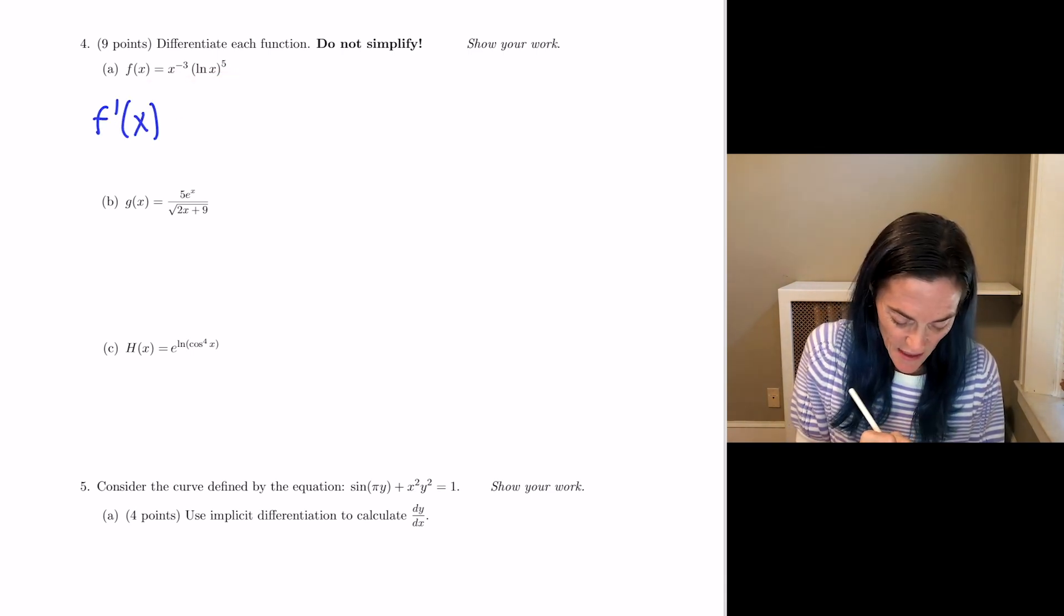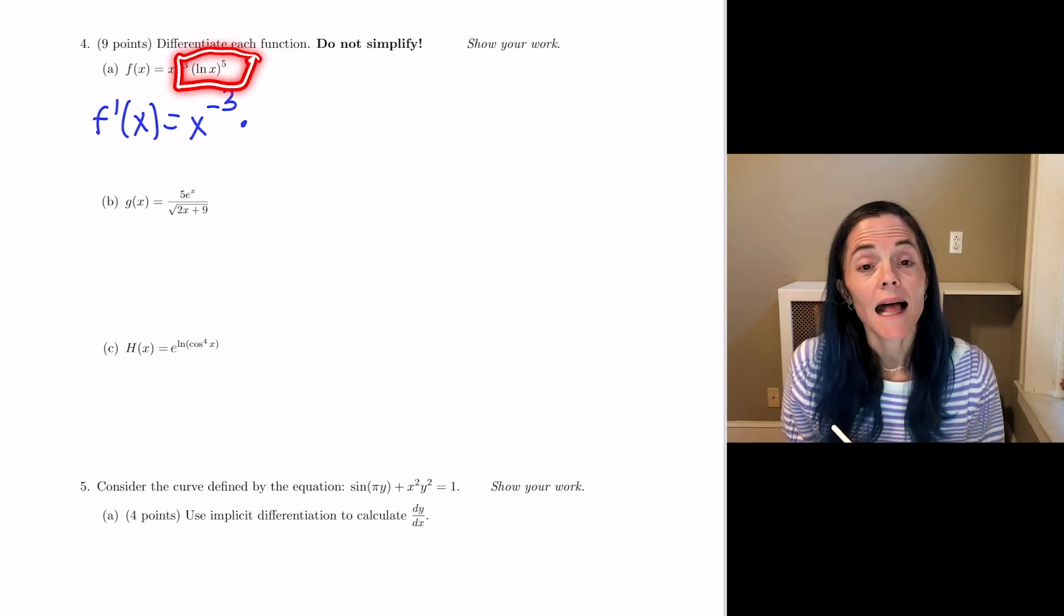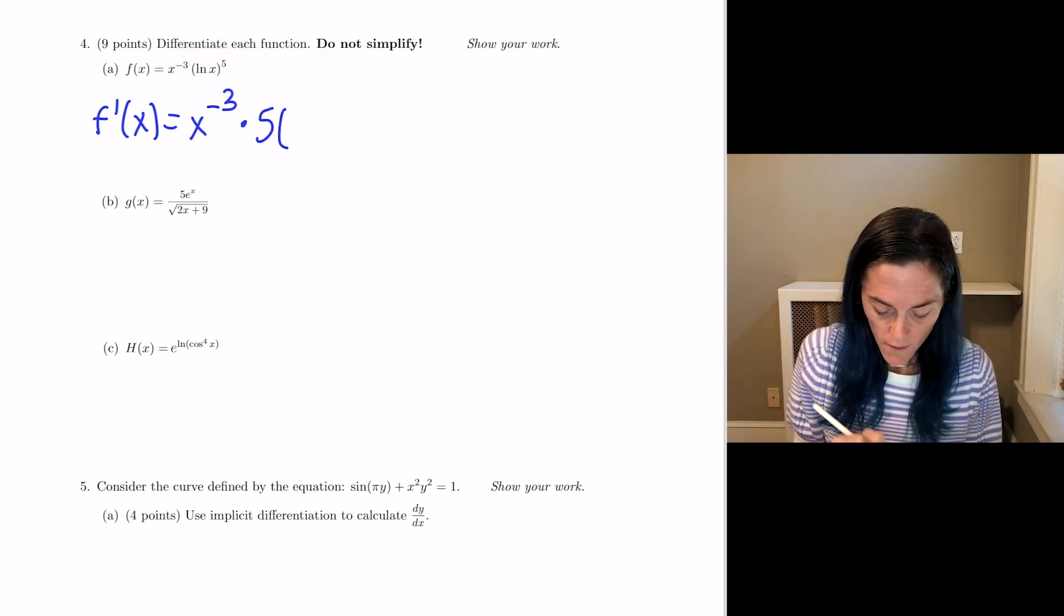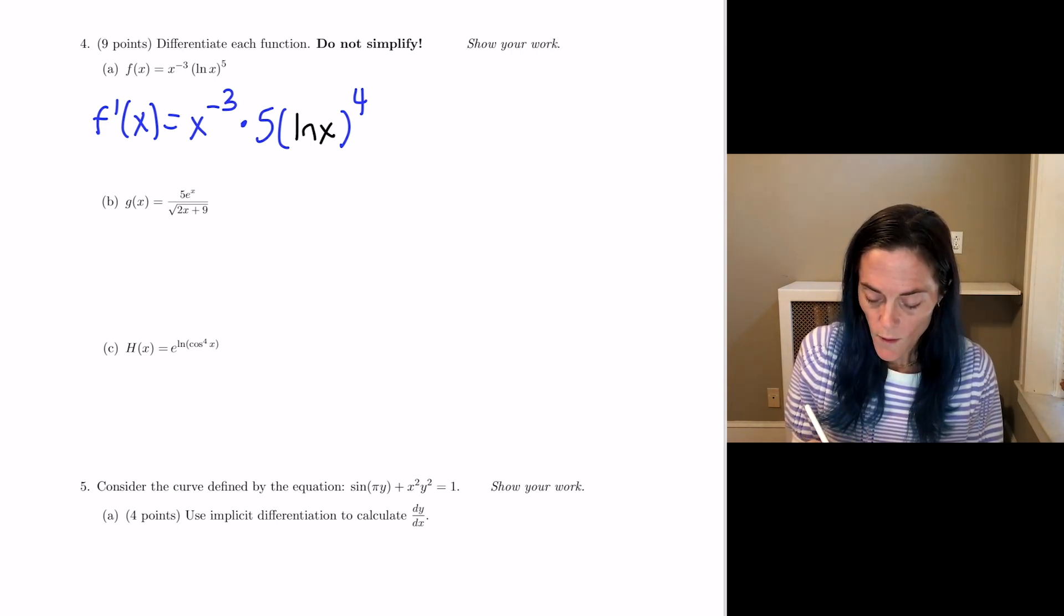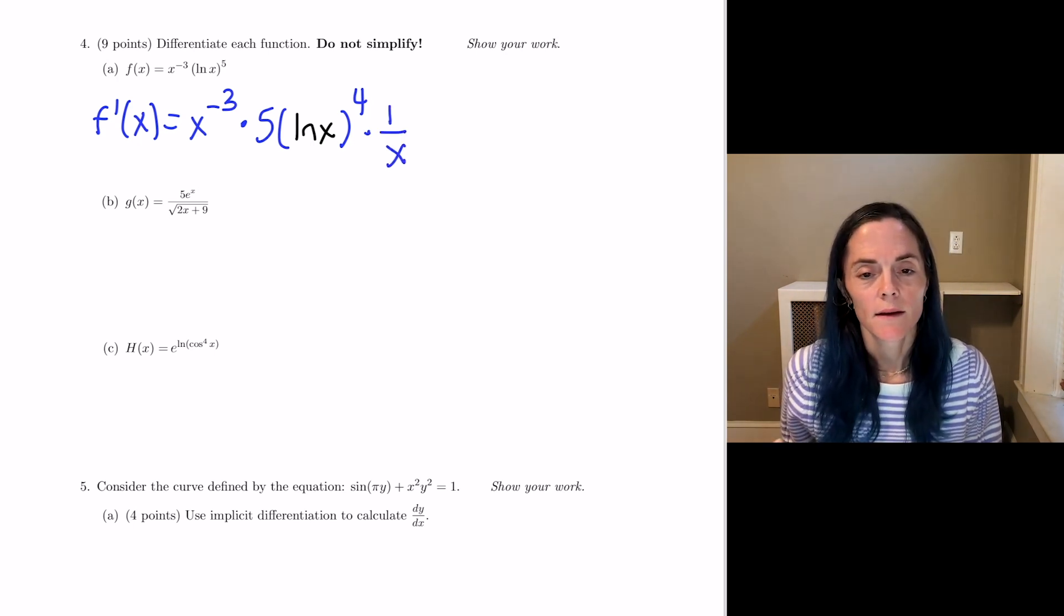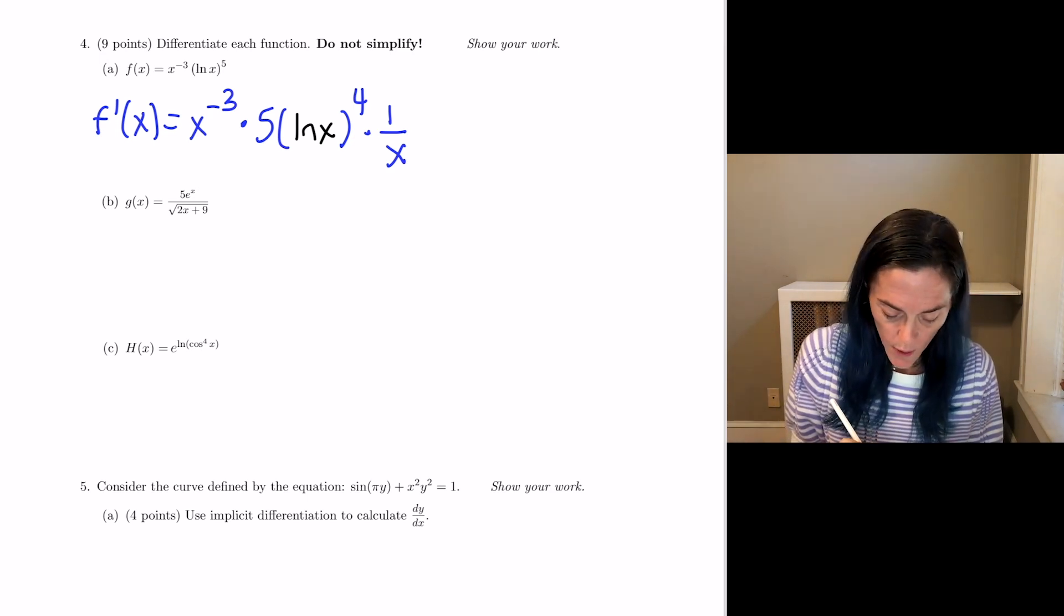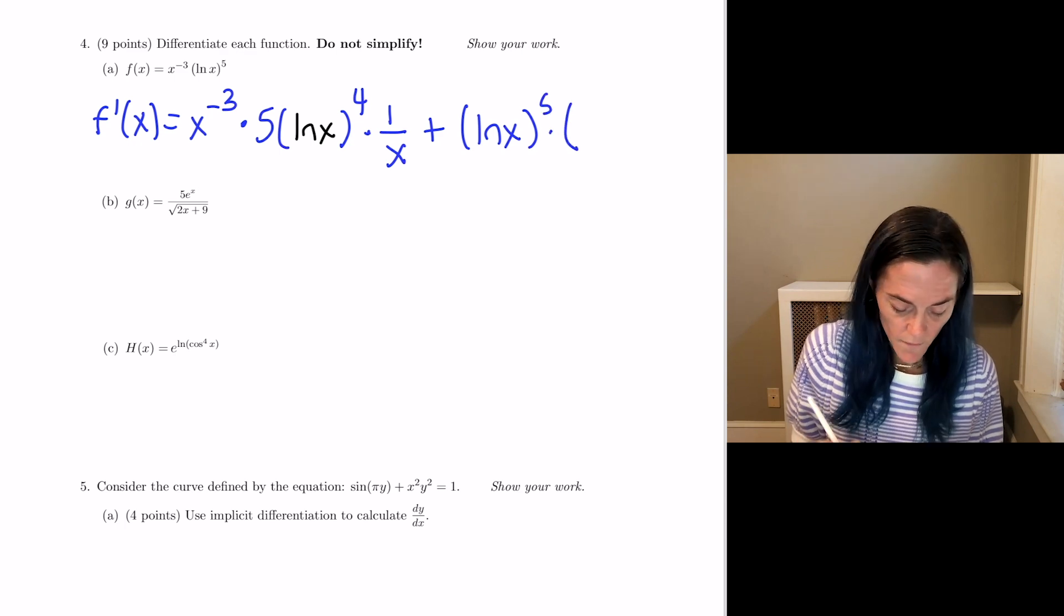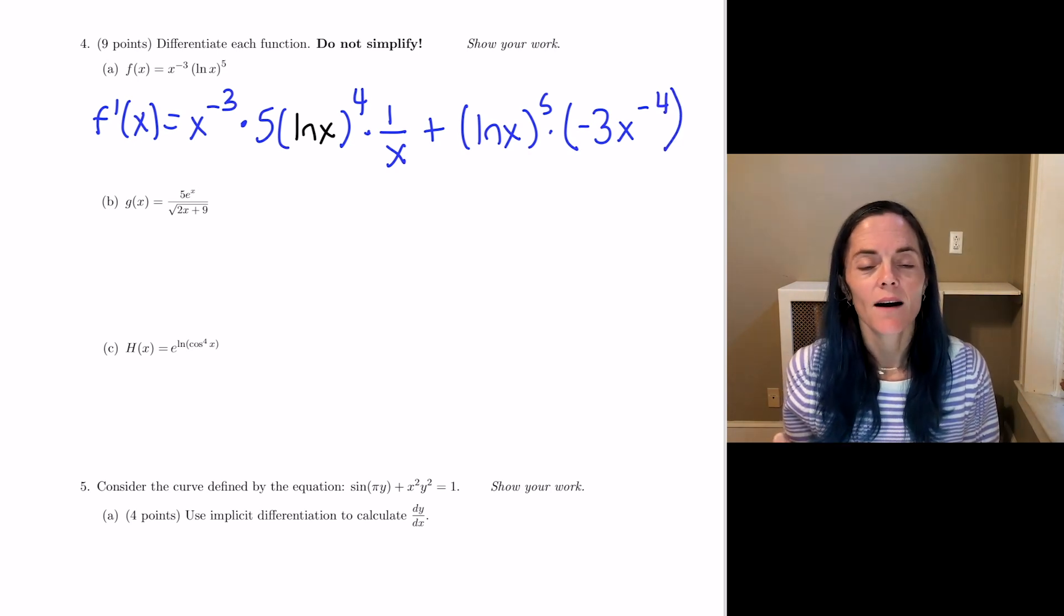f prime of x, we have first times. Well when I go to differentiate this function, ln x to the fifth power, this is chain rule. So we have five ln x to the four. There's the derivative of the outside evaluated at the inside. Then we multiply by the derivative of the inside function. Derivative of natural log is one over x. Now ask yourself, am I finished? Absolutely not. This was first derivative of the second. Then we put a plus and we write down the second and then times the derivative of the first minus three x to the minus four. This is my final answer. We do not need to simplify our derivatives.